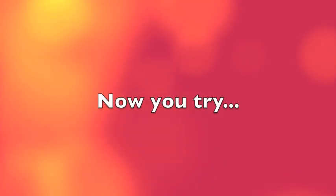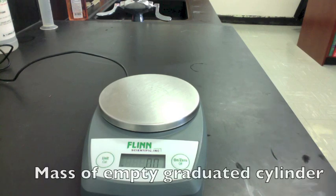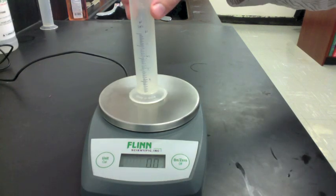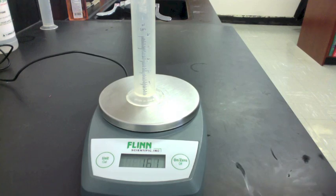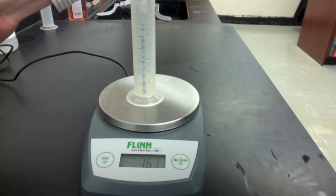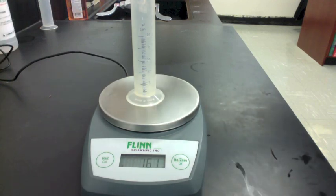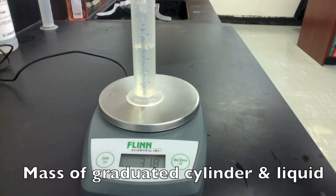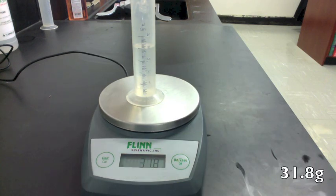Here's one you can try. You can work out the density of acetone. Here's the mass of the empty graduated cylinder. We add the acetone and get the new mass. Don't forget to subtract.